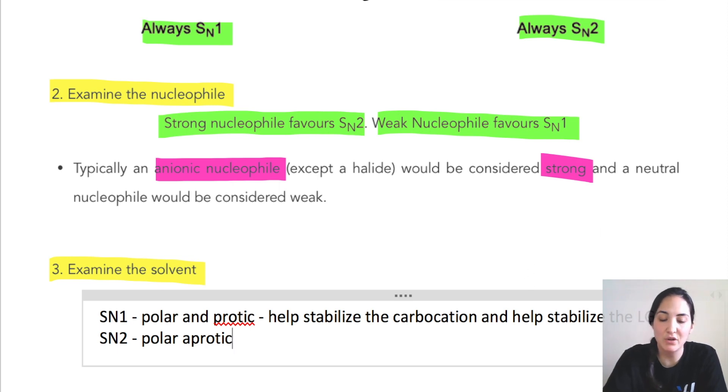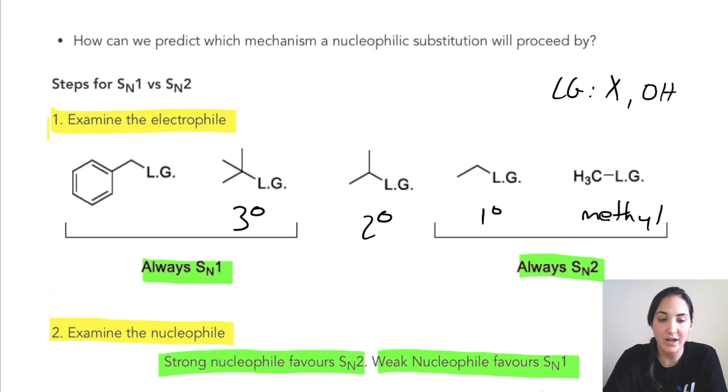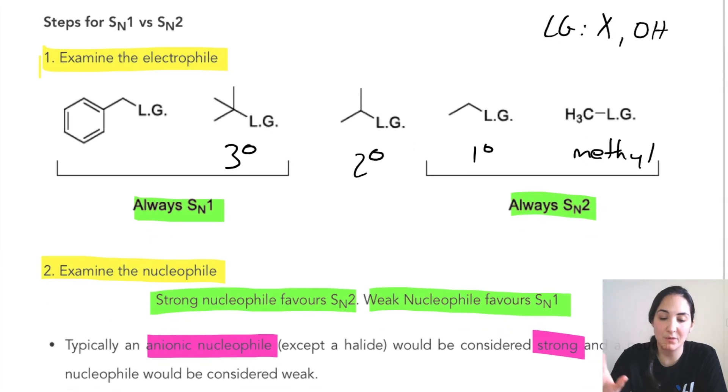So this is a general overview of competition between SN1 and SN2 and what to look for.